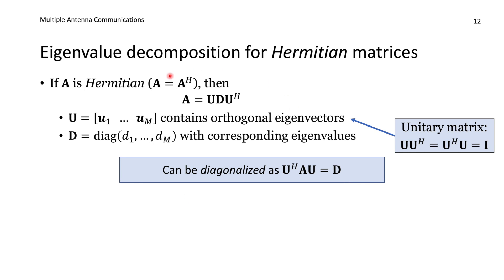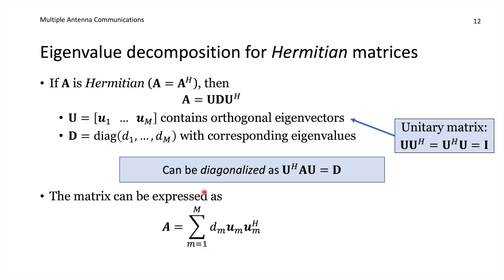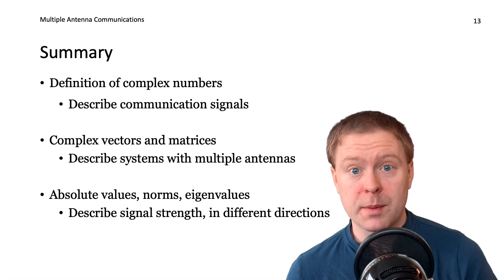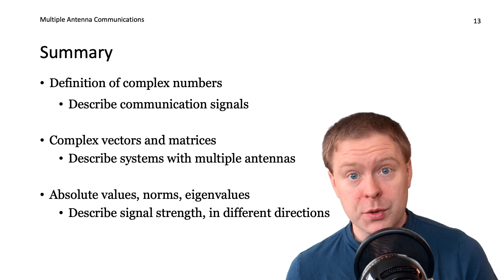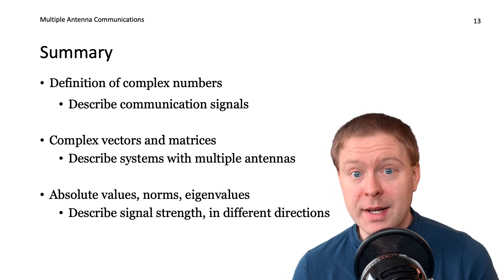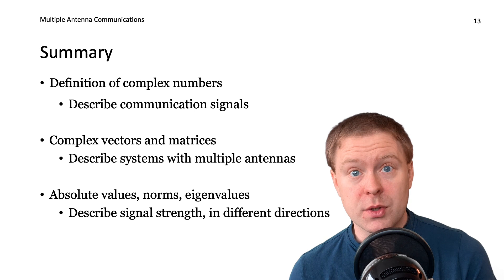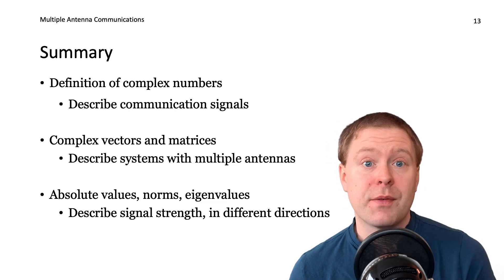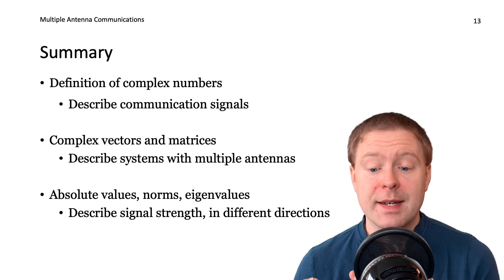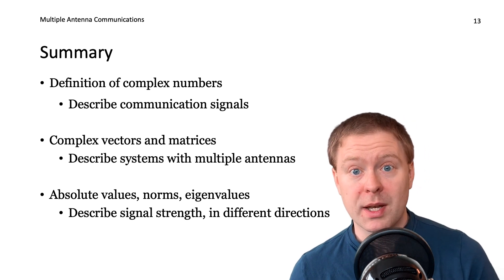The eigenvalue decomposition also allows us to write A as a summation over the m eigenvalues: for each one, we take the eigenvalue, multiply it by the eigenvector, and then by the eigenvector with Hermitian transpose — an outer product — and sum them all up to recover the matrix. In summary, this video has covered complex numbers — useful for describing communication signals — complex vectors and matrices important in multiple antenna communications, and magnitudes, norms, and eigenvalue decompositions essential for describing signal strength in different directions with multiple antennas.